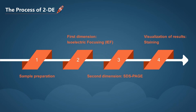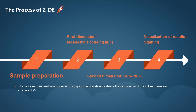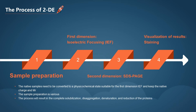Speaking of sample preparation, the native samples need to be converted to a physical chemical state suitable for the first dimension isoelectric focusing, and keep the native charge and molecular weights of the constituent proteins. The sample preparation varies because of the difference in the types and origins of proteins. Ideally, the process will result in the complete solubilization, disaggregation, denaturation, and reduction of the proteins in the sample.